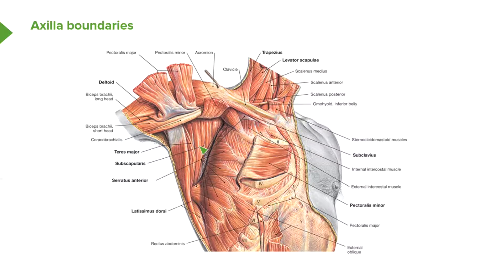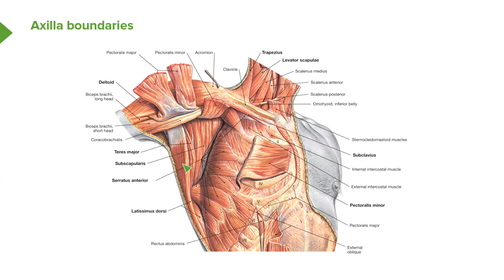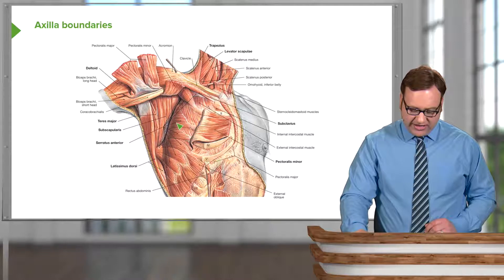Posteriorly, we have subscapularis, teres major running down here, and latissimus dorsi. So posteriorly: subscapularis, teres major, and latissimus dorsi. Laterally, we can see the intertubercular groove running along the humerus with the various muscles inserting into it. And medially, we've got the digits of serratus anterior forming the medial boundary. To summarize: anteriorly the pectoralis muscles, posteriorly subscapularis, teres major, and latissimus dorsi, laterally the intertubercular groove, and medially serratus anterior.